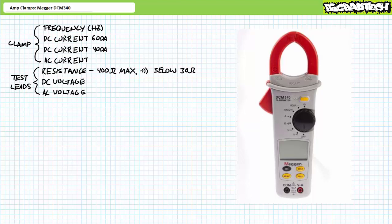The top four functions, AC current, two ranges of DC current and frequency, use the jaws as I've previously demonstrated. Among other applications, the AC current clamp can be used to measure current in three phase AC systems and inrush.